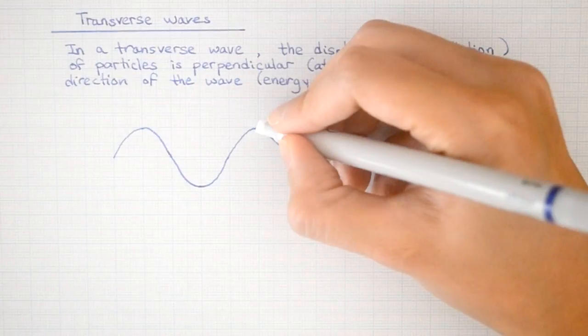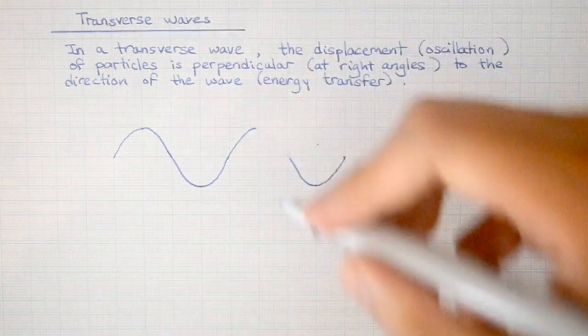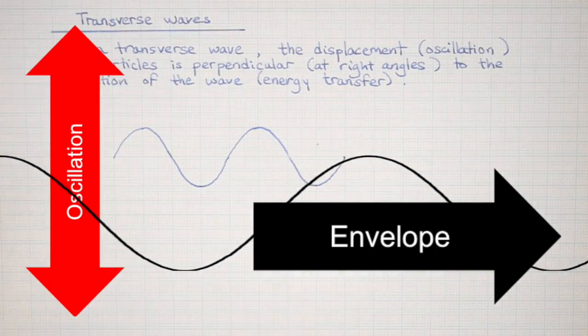In the case of this transverse wave, the envelope is moving to the right. The particles are oscillating up and down.